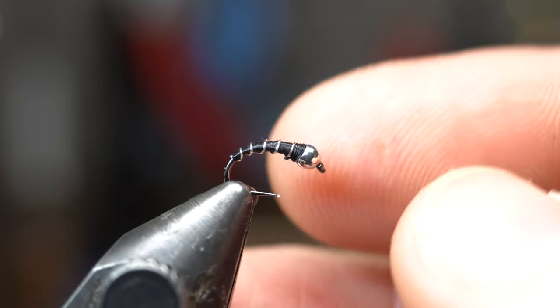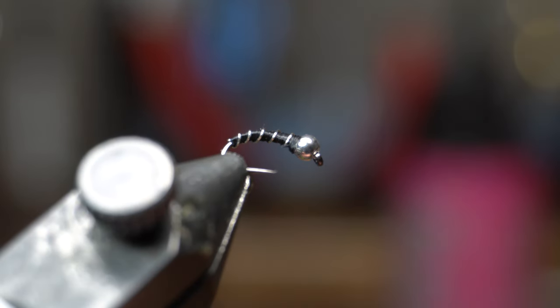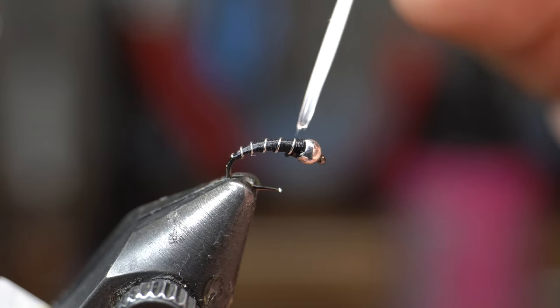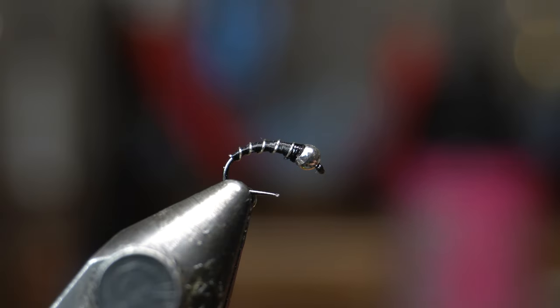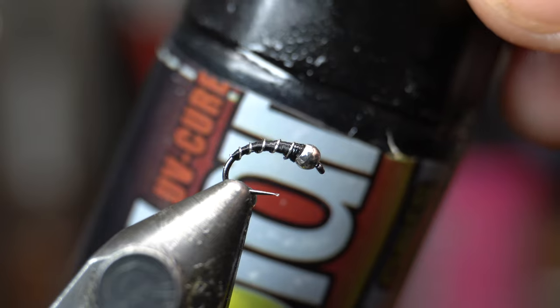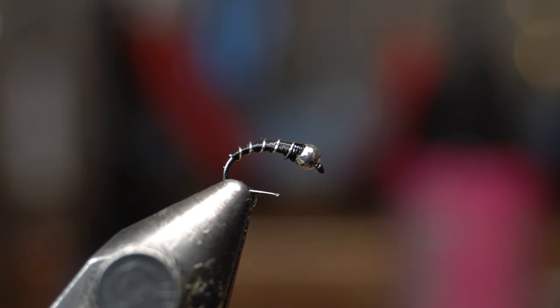For the final step I like using this Bone Dry ultra thin formula from Risen Fly. It's a UV resin, so you just paint a little on. It's kind of like a varnish but it's actually a UV resin. It's super thin, just paint a little on, let it soak into the thread wraps a little bit, and then you just hit it with your UV light.